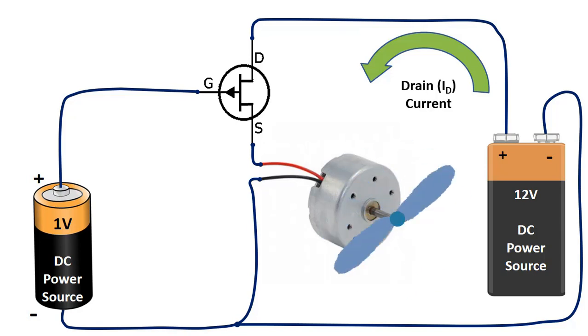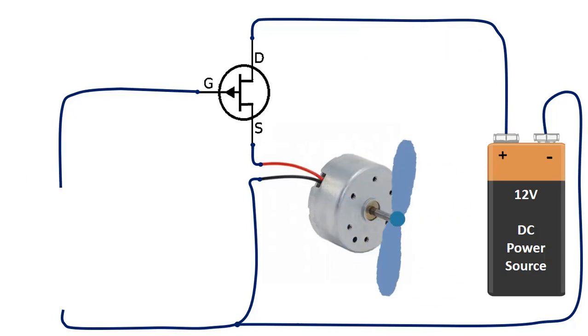Let's connect 3V voltage source instead. In this way, we can see that the motor turns slower. So the current between drain and source has decreased slightly.